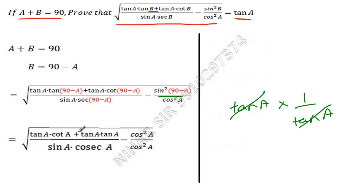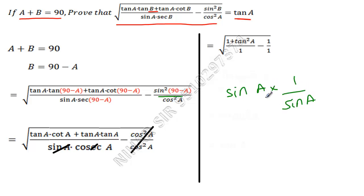If you know the identities, you can understand it better. Cot A into tan A is 1. Tan A into tan A is tan²A. Here these two things are canceled, so 1 over 1. And here sine into cosec—cosec and sine are reciprocal of each other, so sine A into 1 upon sine A (cosec A is equals to 1 upon sine A)—cancel, cancel, so that is 1.